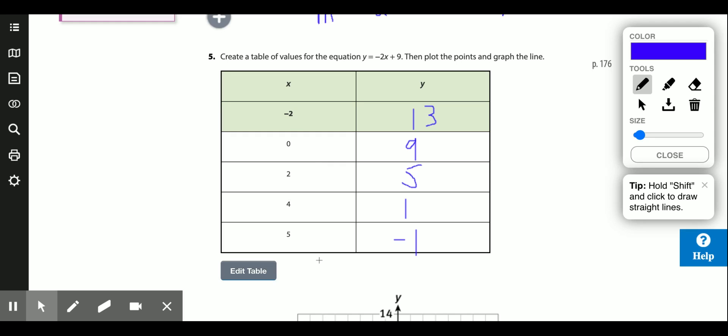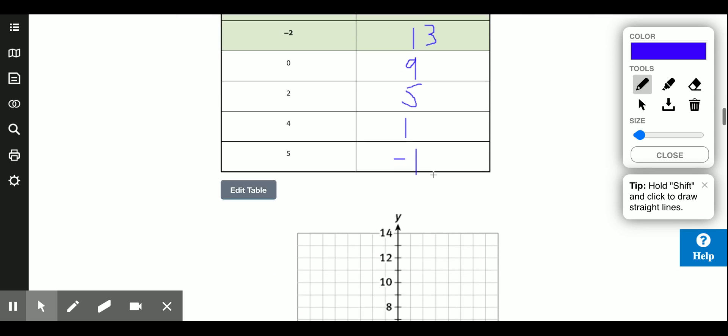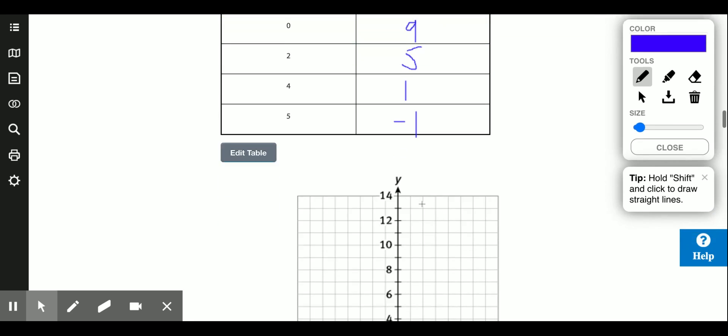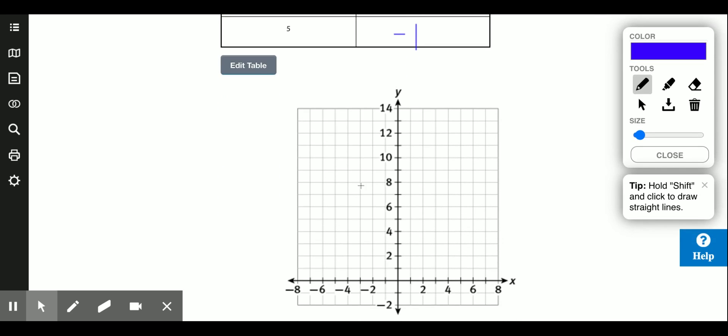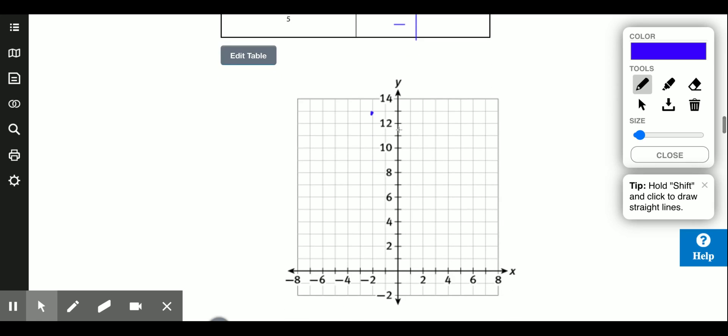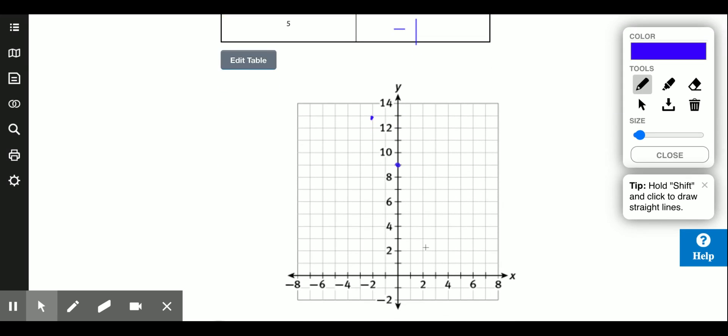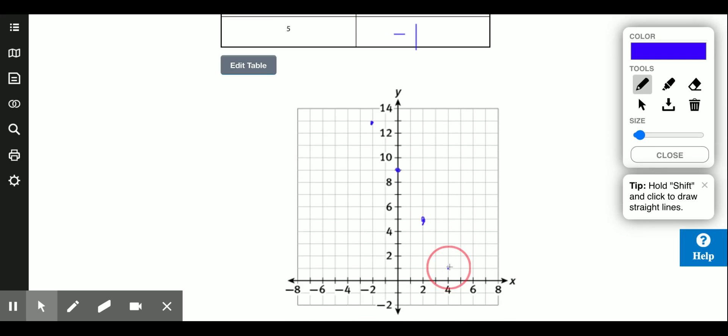As x increases, y decreases. So if you're going toward the right, it's going down. So this would be a decrease in 5. And we can plot those points. Negative 2, 13 would be right up there. 0, 9 would be right here. 2, 5 here. 4, 1 here. You can see that's a line. It makes a linear equation. It's going downwards.